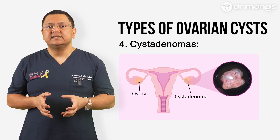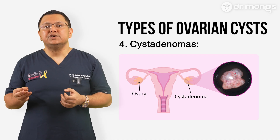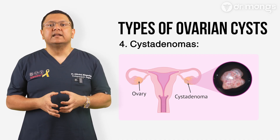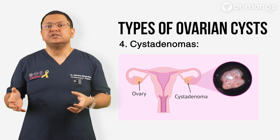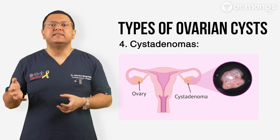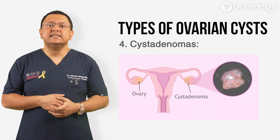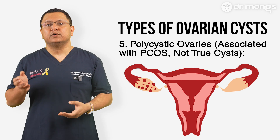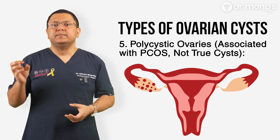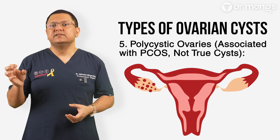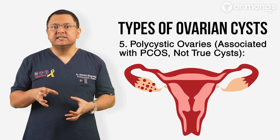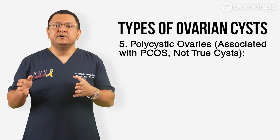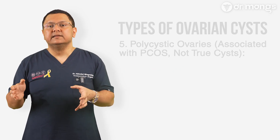Cystadenomas develop from ovarian tissue and can be filled with fluid or mucus. They can grow large and sometimes require surgical removal if they cause symptoms or if malignancy is suspected. PCOS is a hormonal condition that causes multiple small follicles to appear on the ovaries resembling cysts. Unlike true cysts, these follicles are not abnormal growths but rather immature eggs that fail to develop properly.